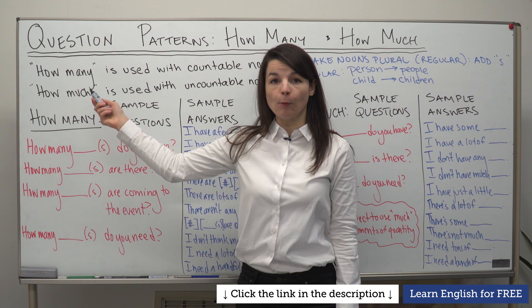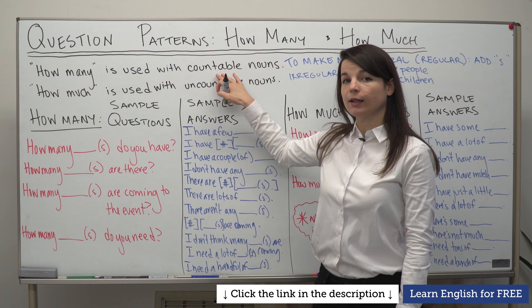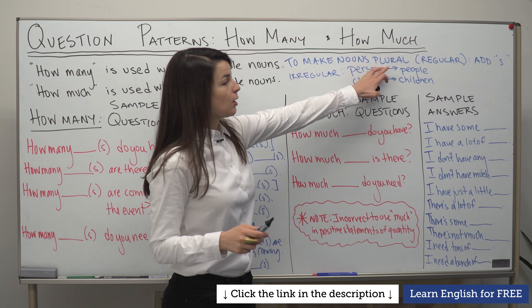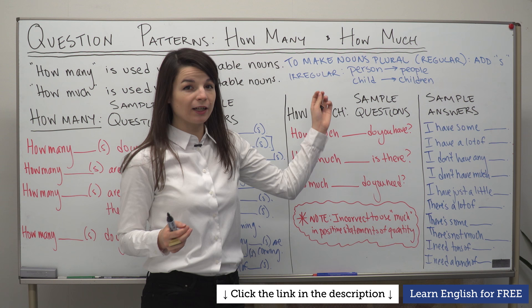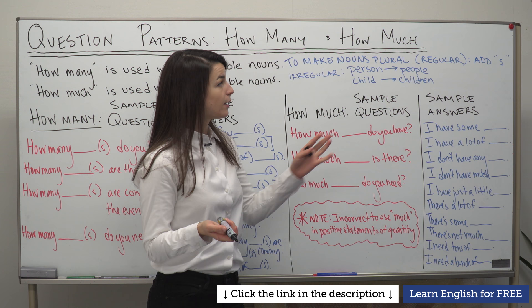First of all, let's look at 'how many'. We use 'how many' when we want to make a question about a countable noun. A countable noun is a noun we can count with numbers like one, two, and three. To make a regular countable noun plural, we simply add an S sound to the end. For example, 'marker' becomes 'markers', 'shirt' becomes 'shirts'. We simply add an S for regular nouns.